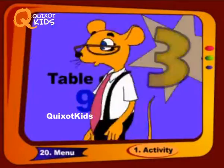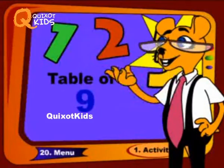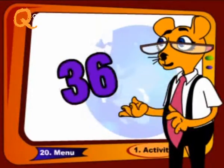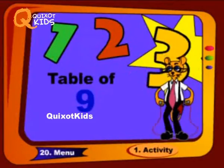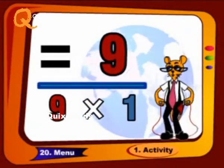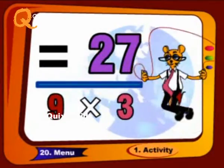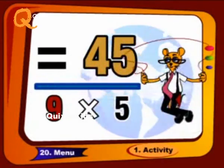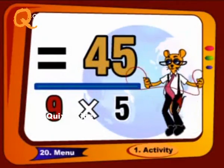Come with me, repeat it again, like this: 9 1's a 9, 9 2's a 18, 9 3's a 27, 9 4's a 36, 9 5's a 45.